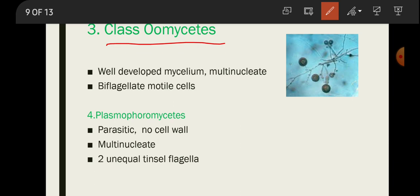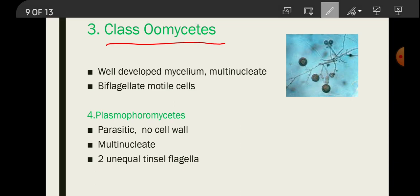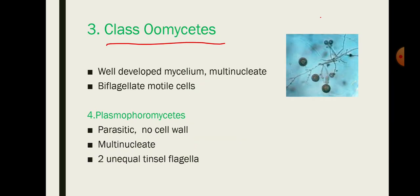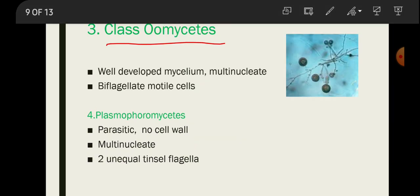The third subclass is Oomycetes. These have well-developed mycelium, multinucleate cells, and biflagellate motile cells. In these biflagellate cells, one flagellum is of the whiplash type and the other is of the tinsel type.